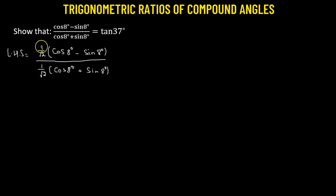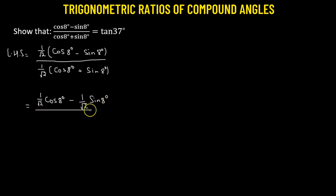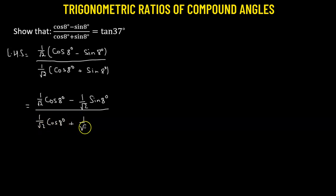The question arises: why are we multiplying by 1 over square root of 2? This will become evident in a moment. Let's rewrite this by distributing: 1 over square root of 2 times cosine 8 degrees minus 1 over square root of 2 times sine 8 degrees, all divided by 1 over square root of 2 times cosine 8 degrees plus 1 over square root of 2 times sine 8 degrees.